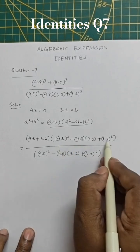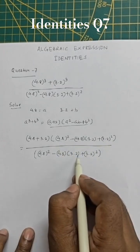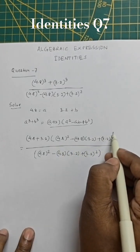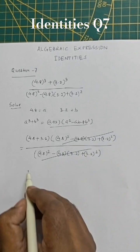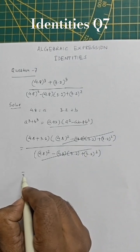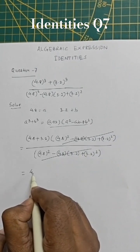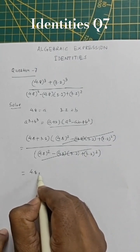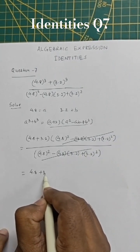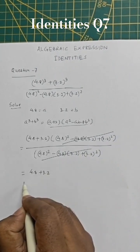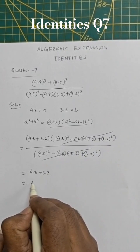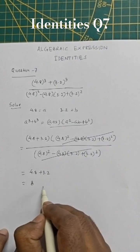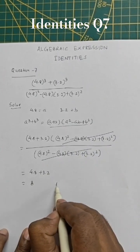If you see the numerator and denominator, these two values are the same, so we can cancel them. Now 4.8 plus 3.2 equals 8. So 8 is the answer.